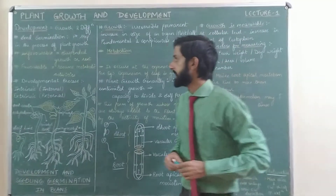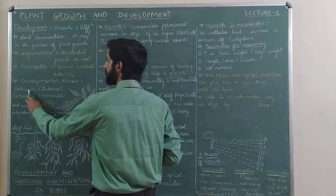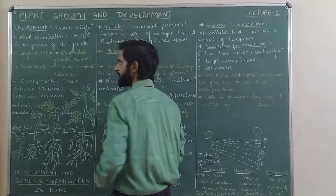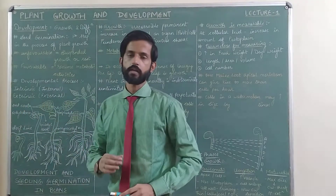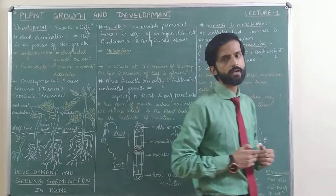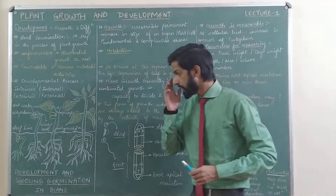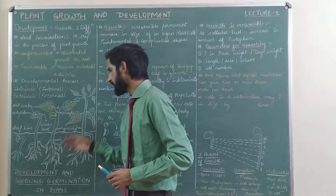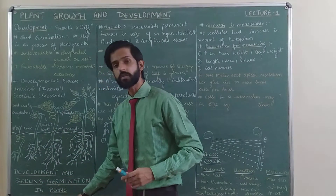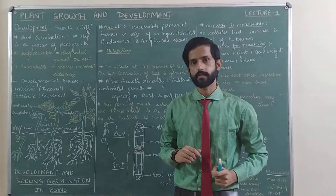The developmental process is dependent upon two factors: intrinsic factors, also called internal factors, and extrinsic factors, also called external factors. Any plant's development depends on these internal and external factors. Now let's look at a diagram from the NCERT showing development and seedling germination in beans — small points to remember as they can come up in the NEET exam.